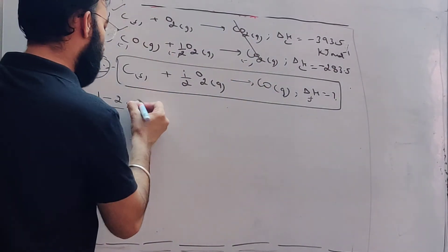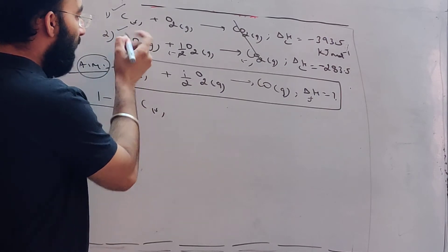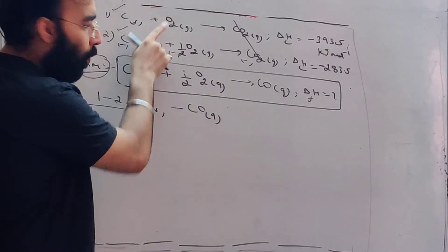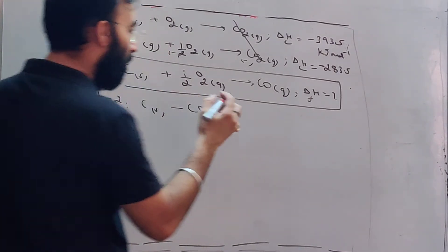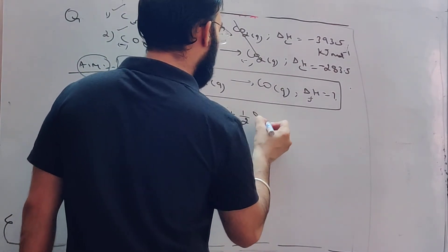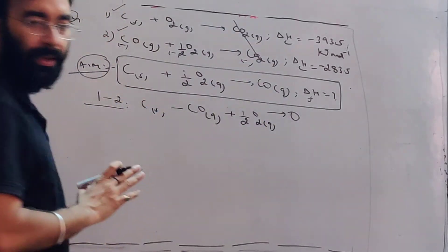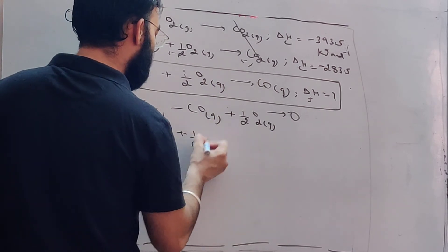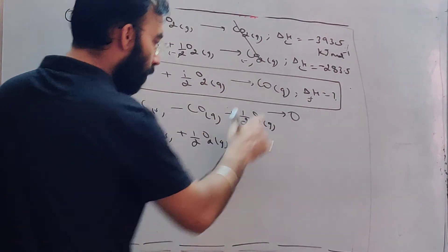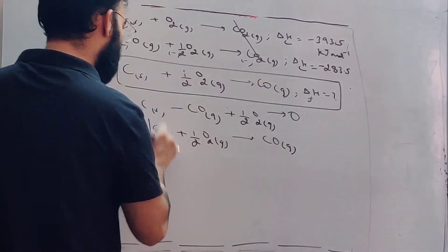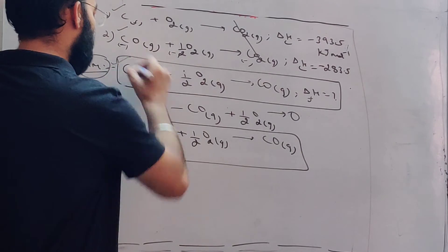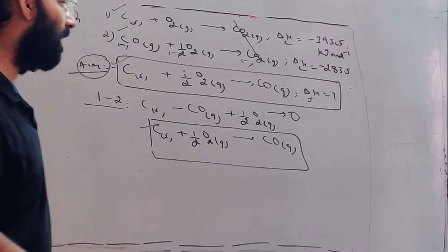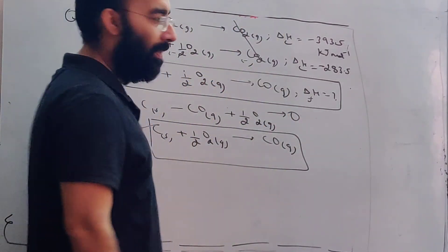If I subtract, look: carbon in solid state minus carbon in solid state, this will get subtracted - carbon solid state minus CO in gaseous state. Plus O2 minus half O2 gives plus half O2, and this gives zero. Now further I can manipulate it like this: carbon in solid state plus half O2 in gaseous state gives CO in gaseous state. Look, we have reached the same equation which was our target.